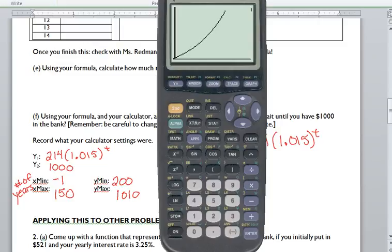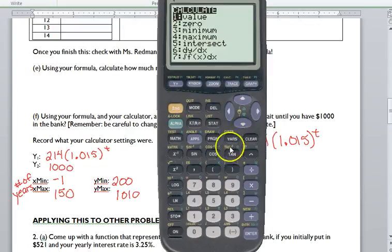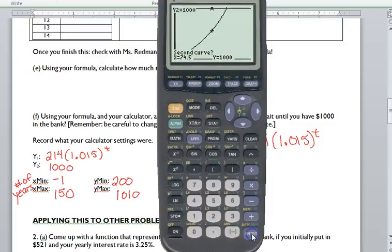Here's my exponential model. It's modeling how much money I have. Here's the 1,000. What am I looking for? The intersection. So, second trace, intersect, enter, enter, enter. And there's my intersection.